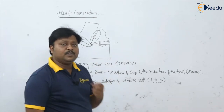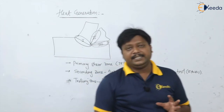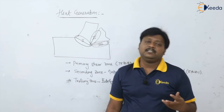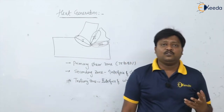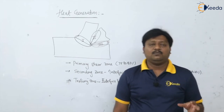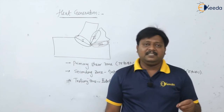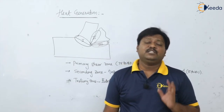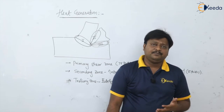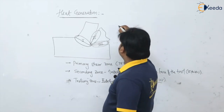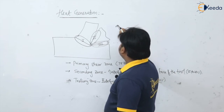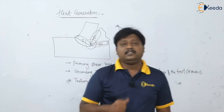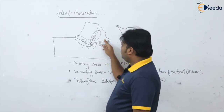All three zones converge at one particular point — the tip of the tool. The temperature at the tool tip is very high, so the tool material must have sufficient hot hardness to withstand these high temperatures. Otherwise, plastic deformation of the tip of the tool will happen. So we have to select the tool with proper hot hardness temperature property.